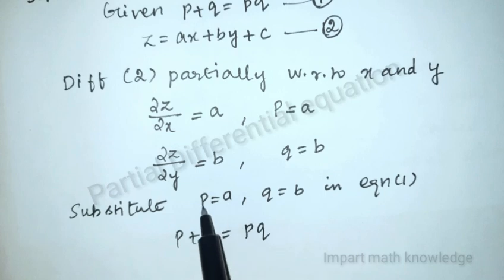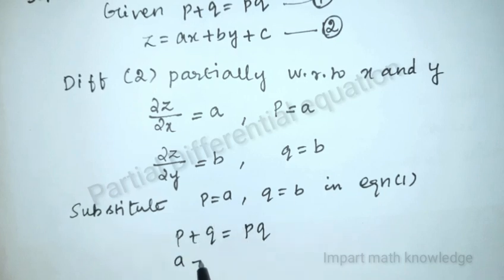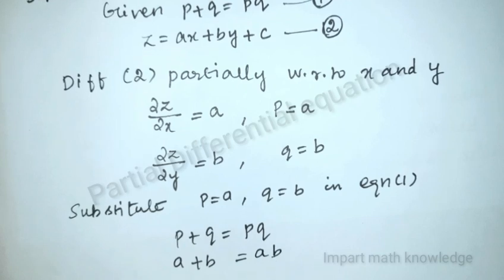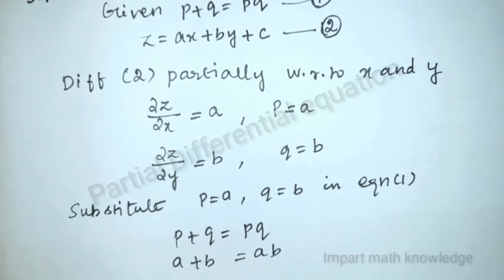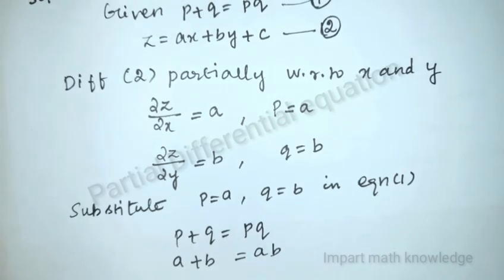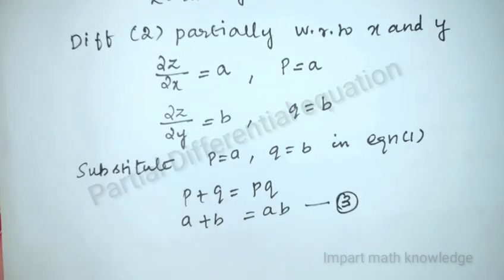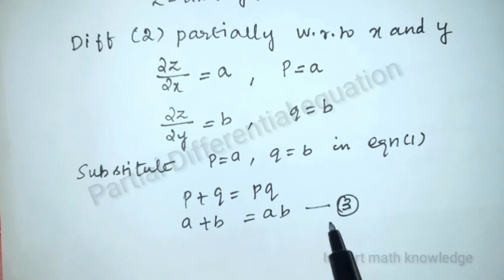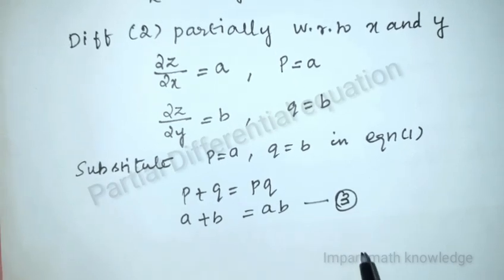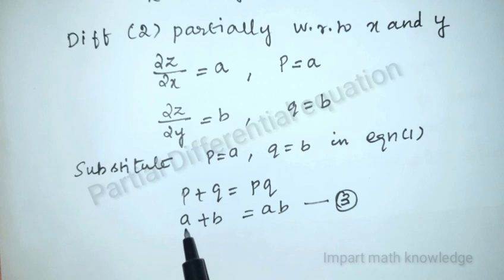Substituting p = a and q = b: a + b = ab. Whenever you do this kind of problem, you always replace p with a and q with b. Take this as equation 3. From this equation, find either the value of a or the value of b.